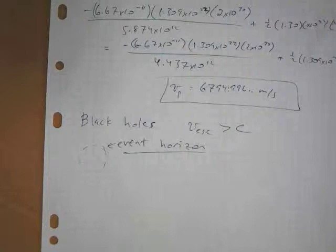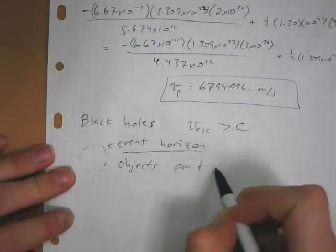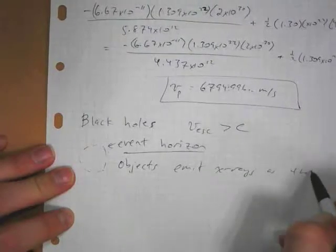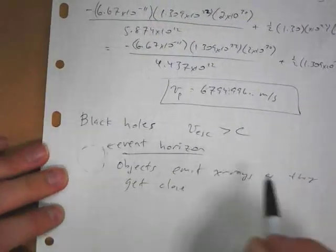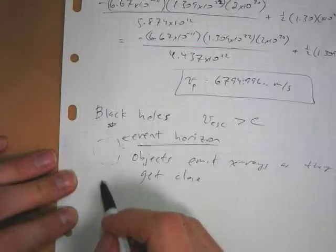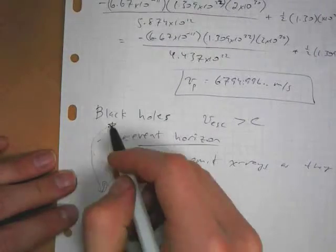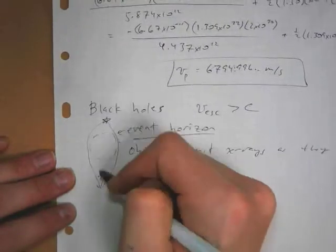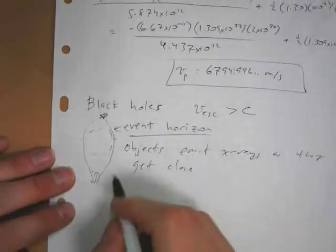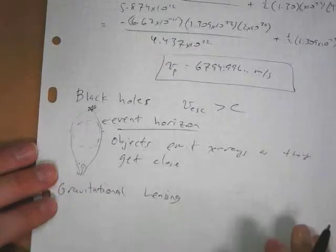Black holes can't be observed directly, but you can, quote, see them because objects emit x-rays as they get close. And also, black holes bend light. So if we're looking from right here, and there's a star back behind this black hole, the light from this star will bend around the black hole, and we'll see, you know, above and below. And so we see multiple images of objects that are directly behind them. That's an effect called gravitational lensing. And so that's how we have evidence for the existence of black holes.